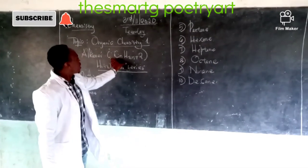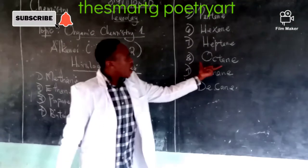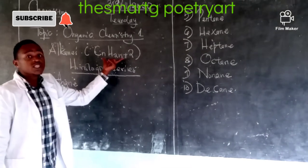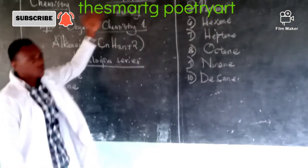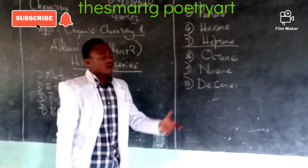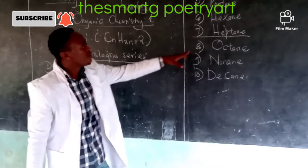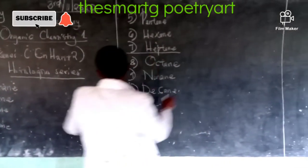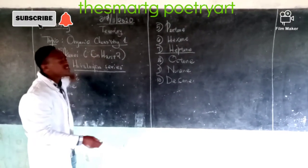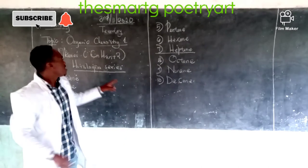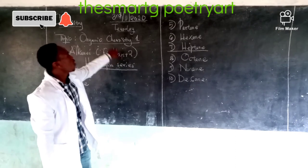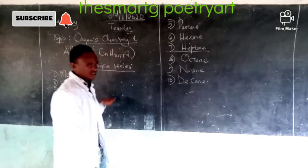Today I'm going to show you how we come up with the molecular formula for these hydrocarbons using the general formula. Let me choose one at random — let me choose heptane. Remember, N stands for the strategic position of that particular hydrocarbon in the series.